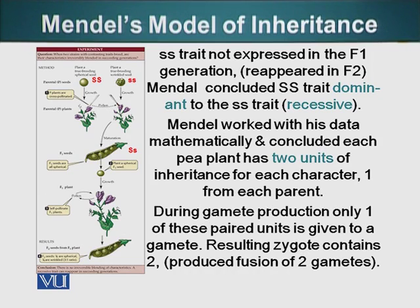When we cross them, since one unit comes from both parents, the resulting F1 plant would have capital S and small s. Since capital S is dominant, all the seeds were spherical and none of them were wrinkled.